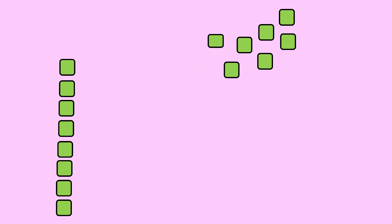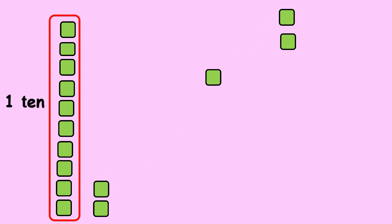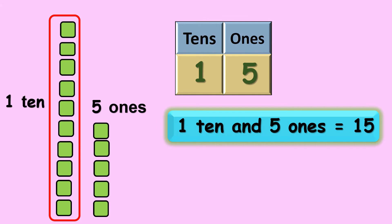So shall we start arranging the blocks? 1 2 3 4 5 6 7 8 9 10. So 10 ones give us 1 ten, and the remaining are 1 2 3 4 and 5. There are 5 ones. So 1 ten and 5 ones gives you 15.